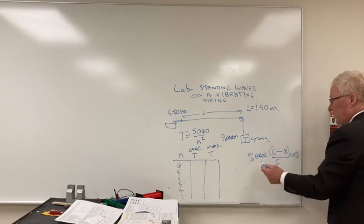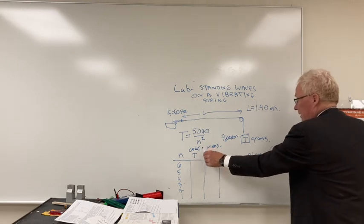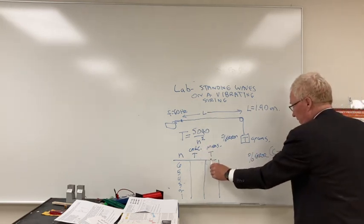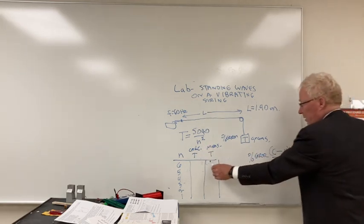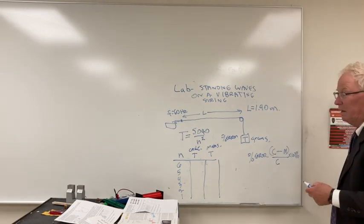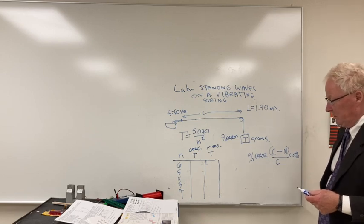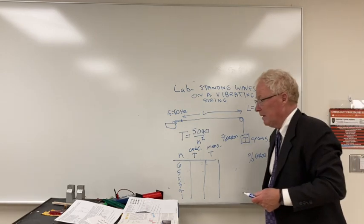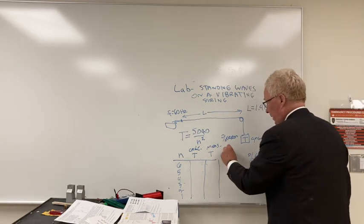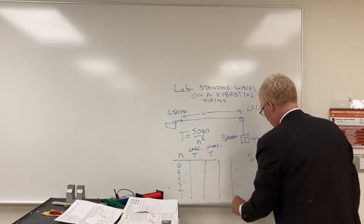To get percent error we take T calculated minus T measured over T calculated times a hundred percent. We'll take the difference of that divided by the calculated times 100, and most of these should turn out to be fairly small percentages.